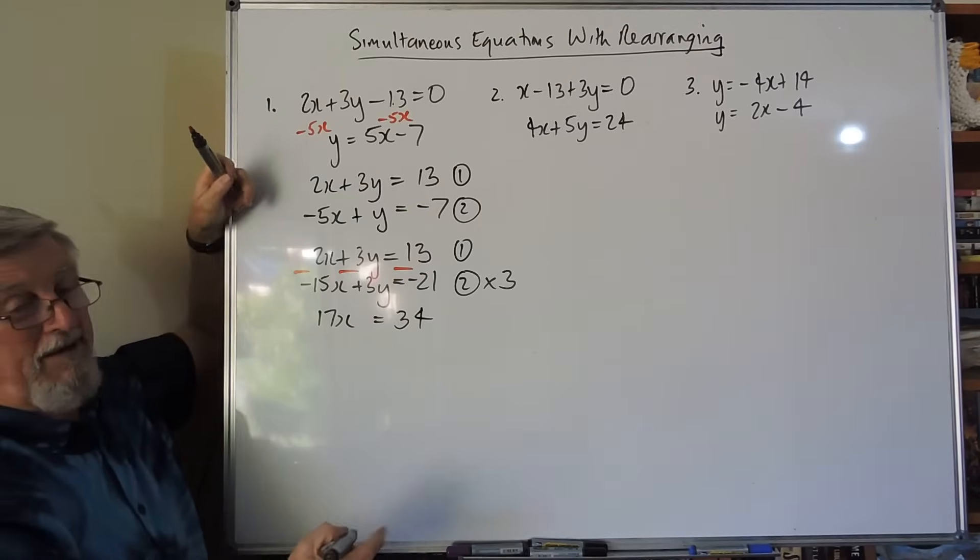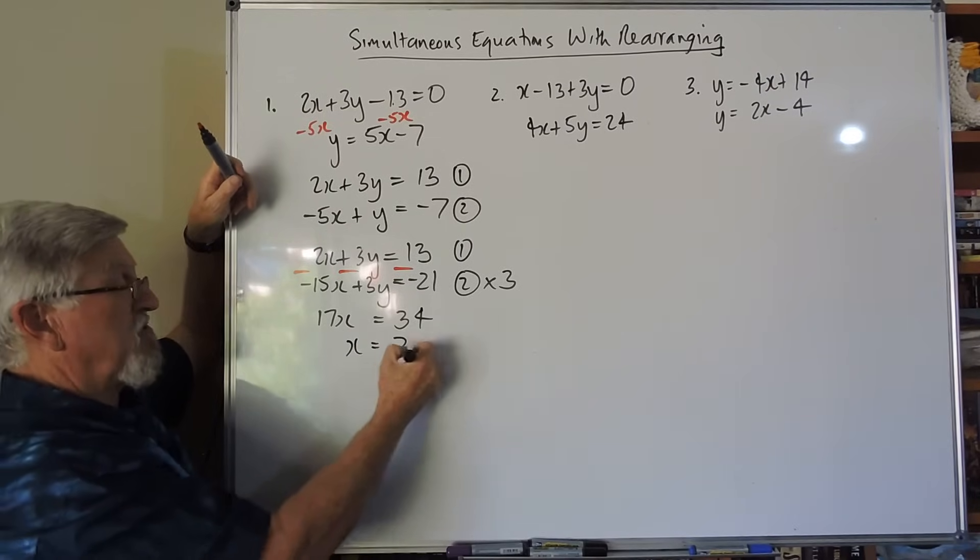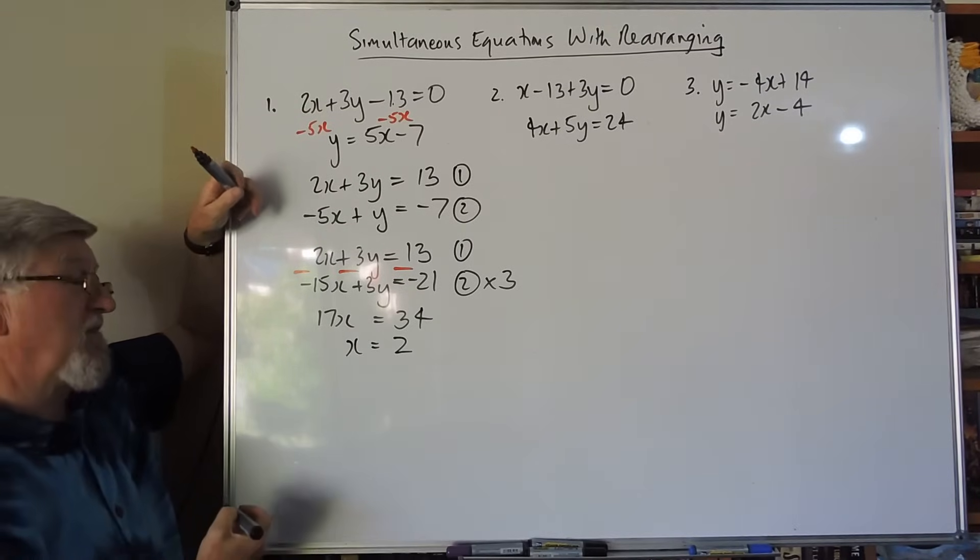And I don't know how people are at their 17 times tables, but if I divide that by 17, divide that by 17, x is 2. And you can be expected to do calculations like that.